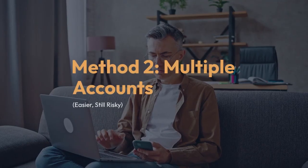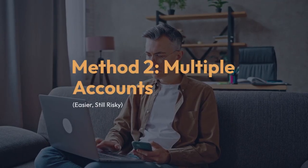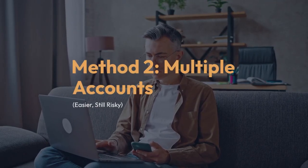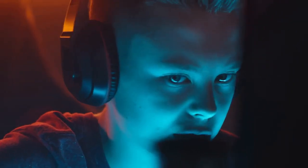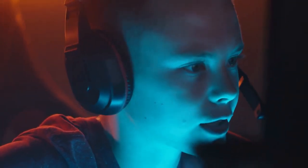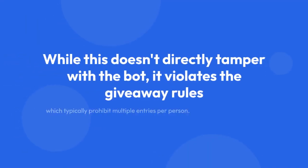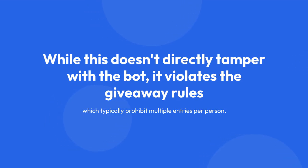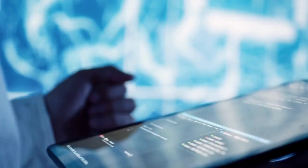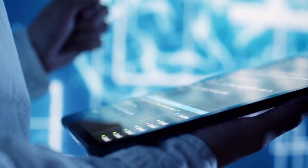3. Method 2 – Multiple Accounts (Easier, Still Risky): A simpler but still unethical approach involves creating numerous fake Discord accounts. You would then use these accounts to enter the giveaway multiple times, significantly increasing your odds of winning. While this doesn't directly tamper with the bot, it violates giveaway rules which typically prohibit multiple entries per person. Detection methods include IP address tracking and account pattern analysis.